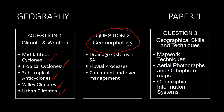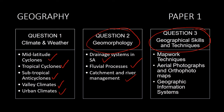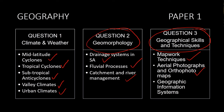In question 2, which focuses on geomorphology, the content relevant is drainage systems in South Africa, fluvial processes, and catchment and river management. Within these broader topics there are various subtopics which we'll discuss in detail later. Question 3, geographical skills and techniques, is made up of map work techniques and all your calculations, aerial photo and orthophoto maps — the application of physical geography on your topographical and orthophoto maps — and geographical information systems, the application of all your GIS concepts from the topographical map.